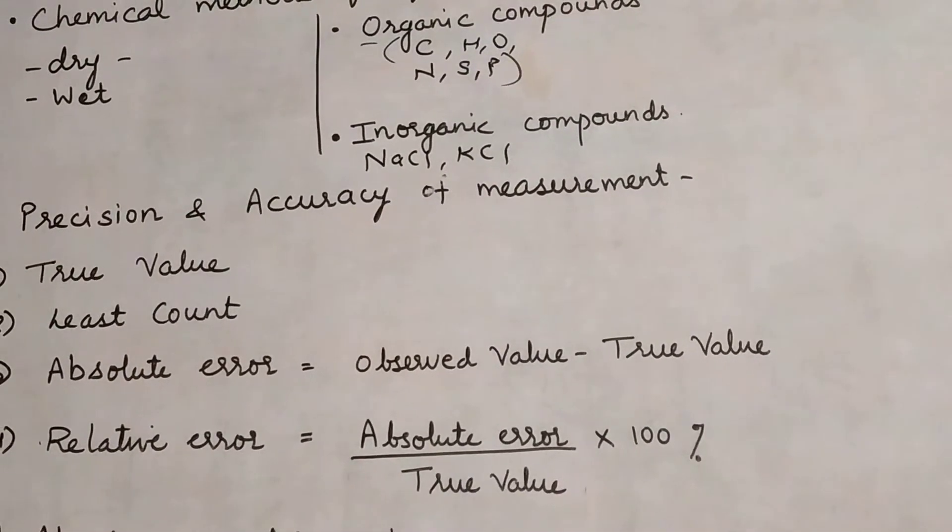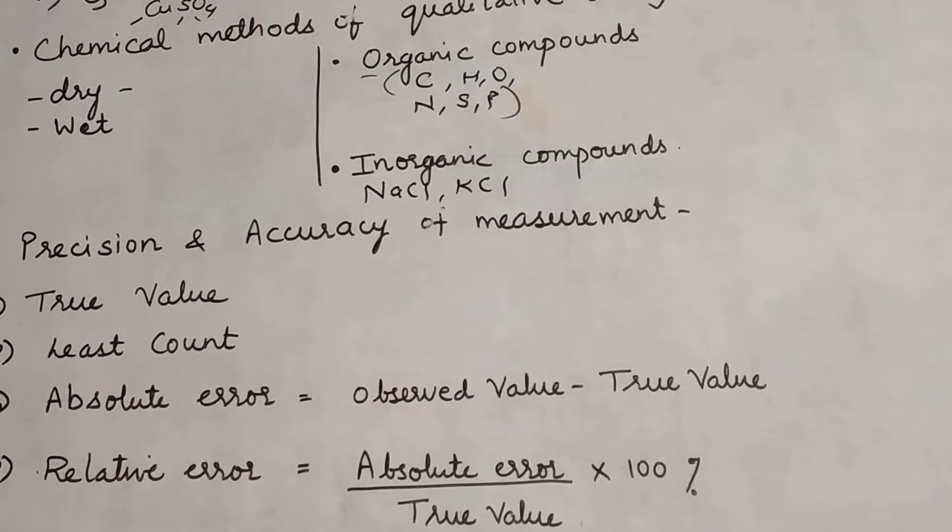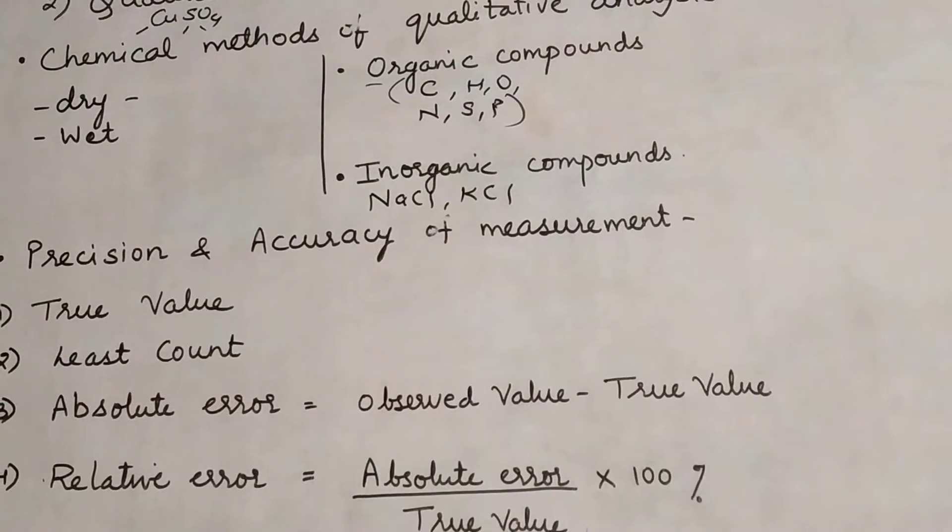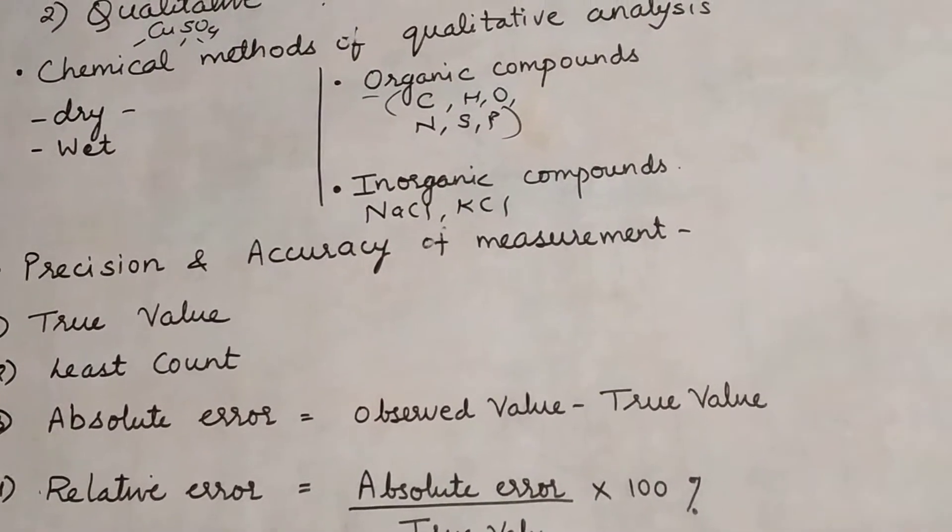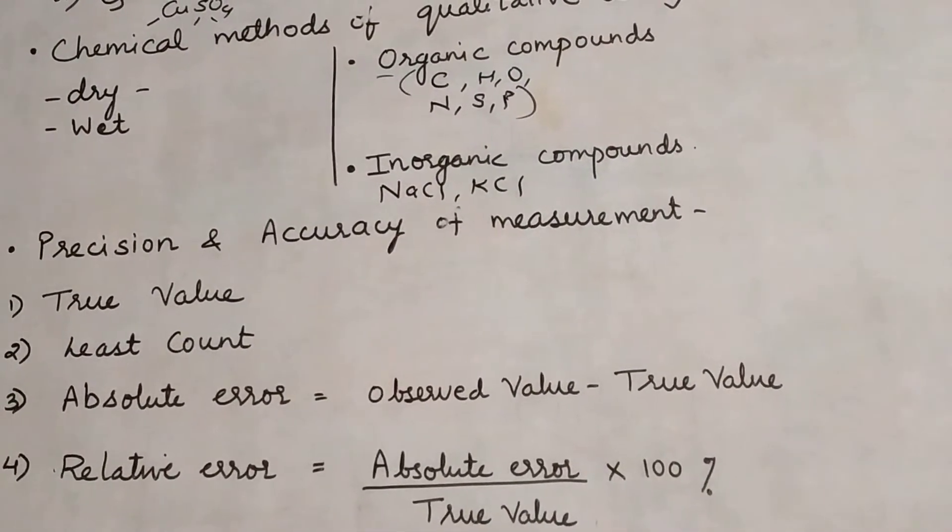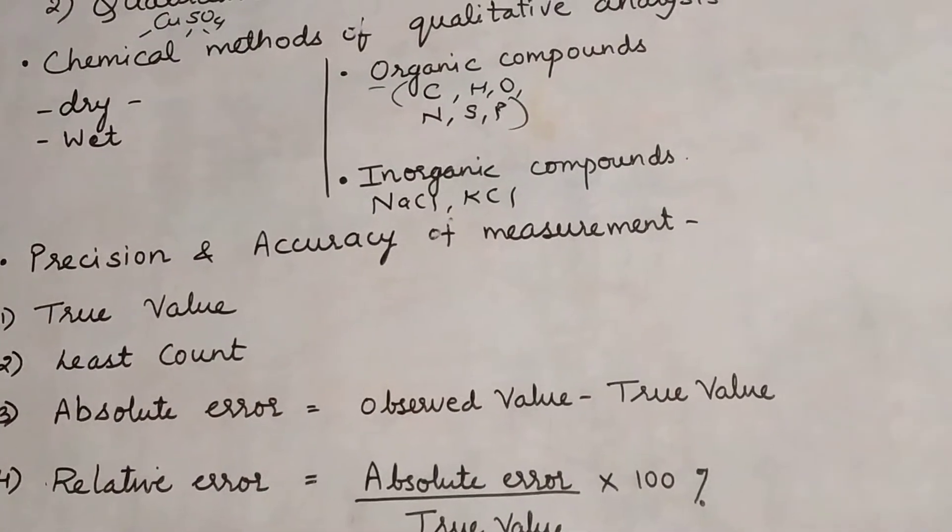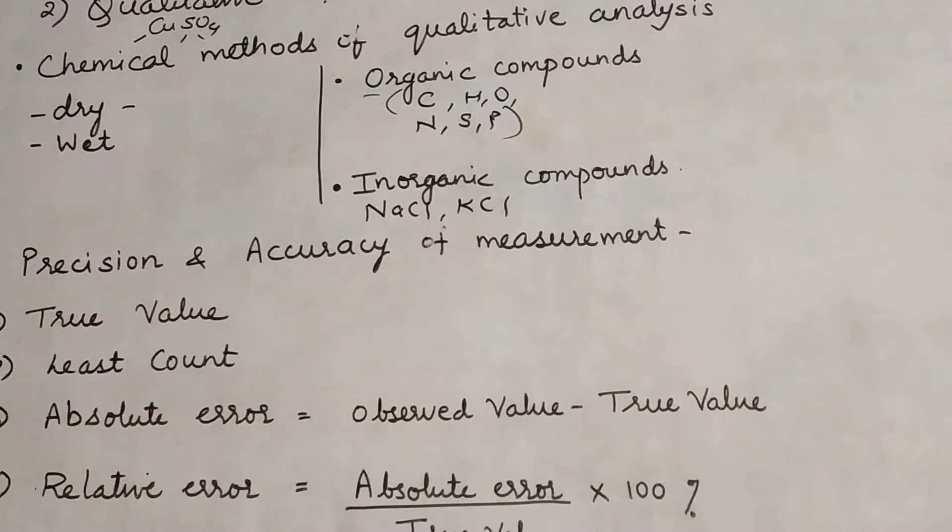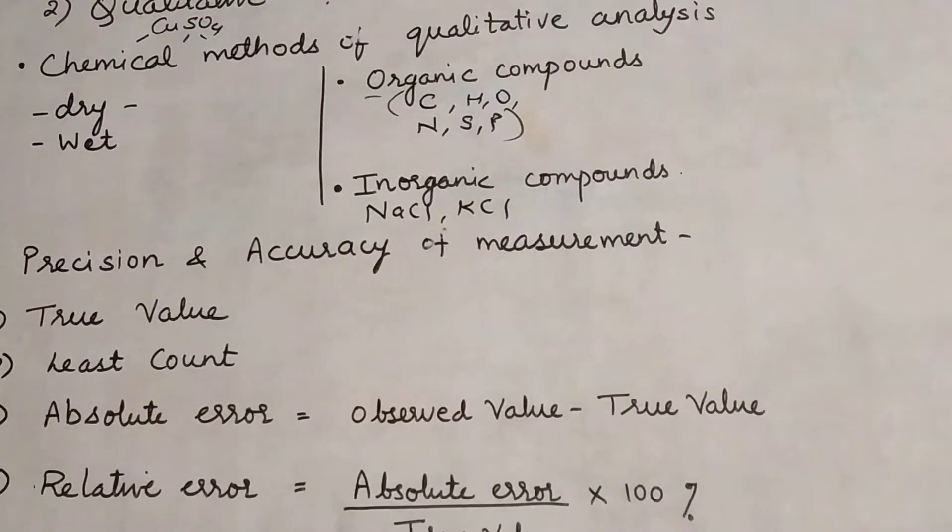For each element there are individual tests. If that test comes positive, then that particular element is present in that organic compound. Suppose there is a test for nitrogen and the test is positive, then nitrogen is present in that organic compound. If the test is negative, then it is absent.